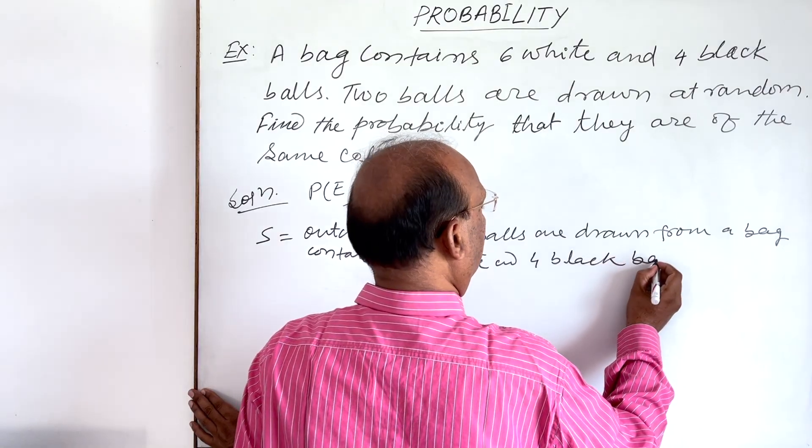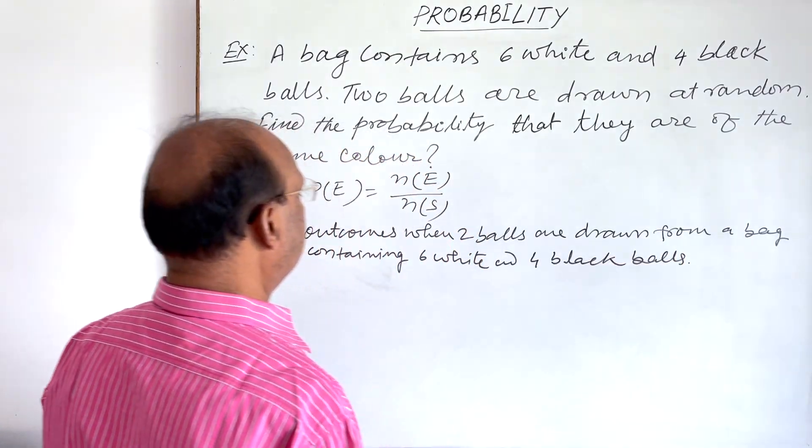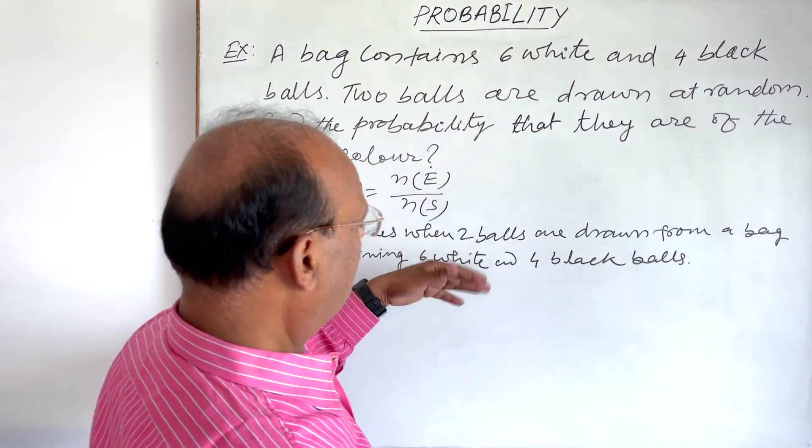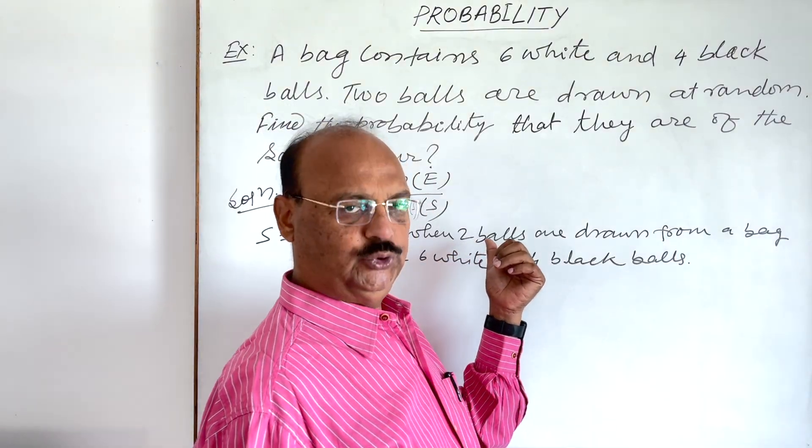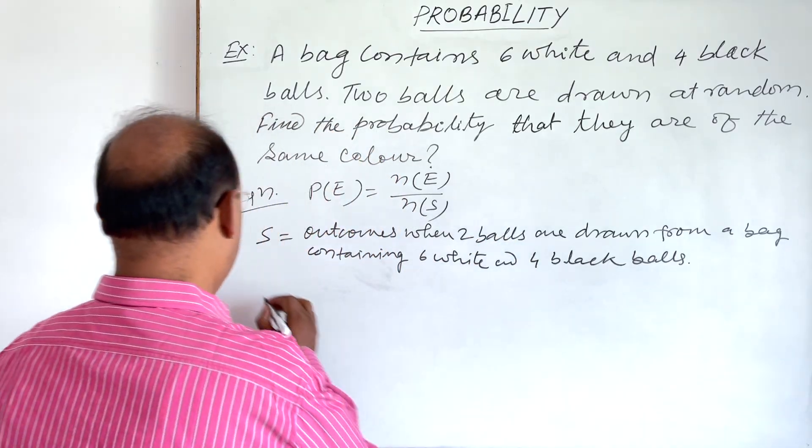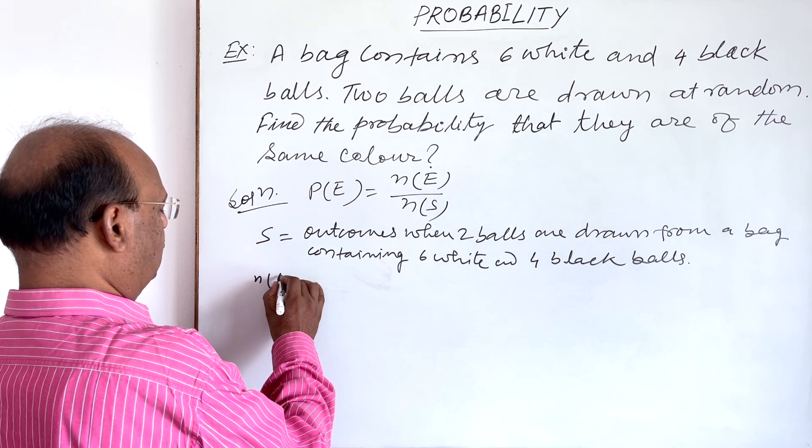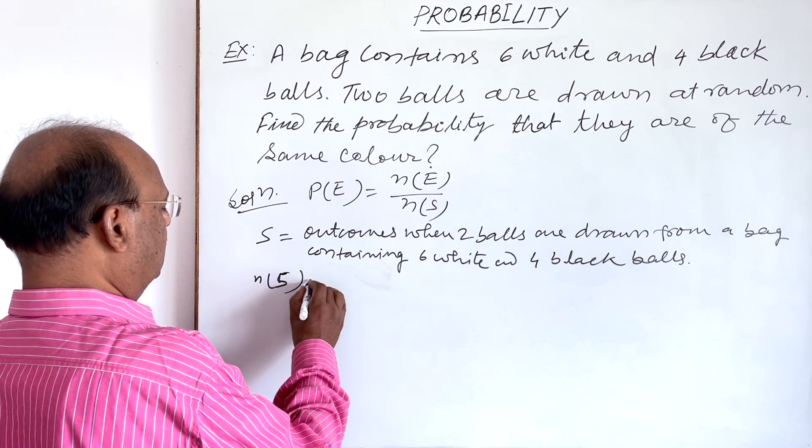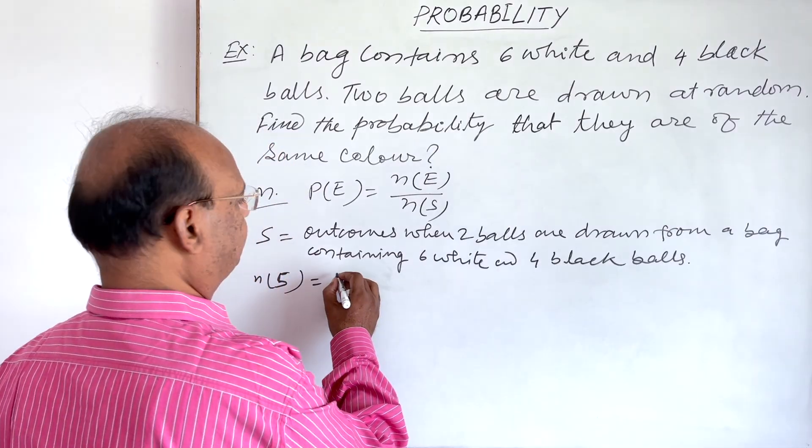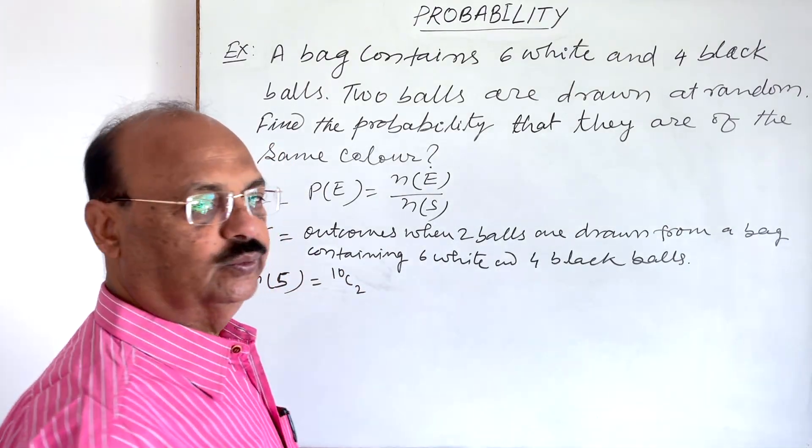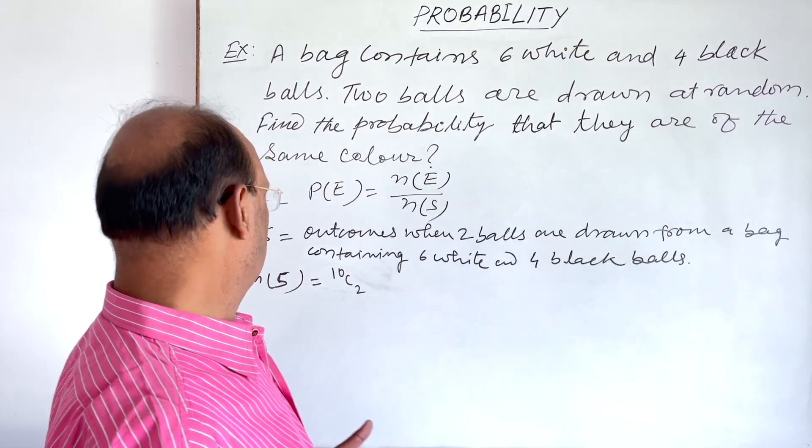Total number of balls is six plus four, that is ten. And out of these ten, we have to draw two. So here, number of possible outcomes in sample space will be out of ten, we have to draw two.